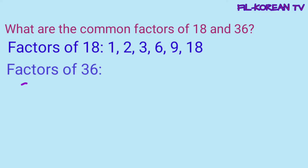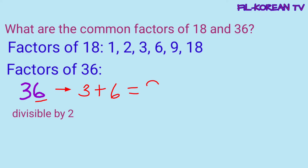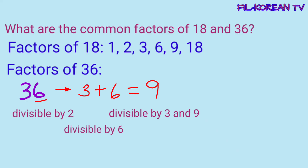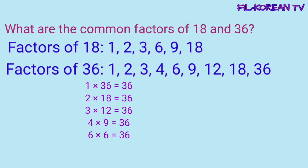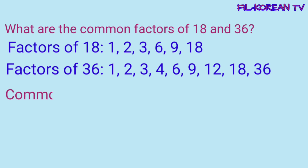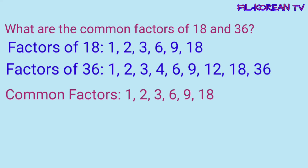Okay, next, kunin din natin yung factors ng 36. Ang 36 ay even number. So, divisible by 2. Ngayon, i-plus natin yung digits: 3 plus 6 equals 9. Ang 9 ay divisible by 3 and 9. Kaya, yung 36 ay divisible ng 3 at 9. At dahil yung 36 ay divisible pareho ng 2 at 3, ibig sabihin divisible din ito ng 6. So, mayroon na siyang apat na factors. Ngayon, iisipin lang natin yung kapares ng factors na ito na kapag i-times natin sila, ang answer ay magiging 36. Eto ngayon yung mga factors ng 36. Ngayon, kunin na natin yung common factors ng 18 at 36. Ang common factors nila ay 1, 2, 3, 6, 9, and 18.